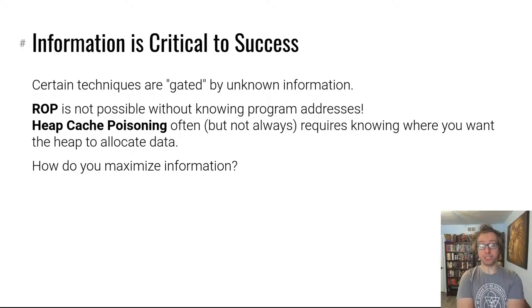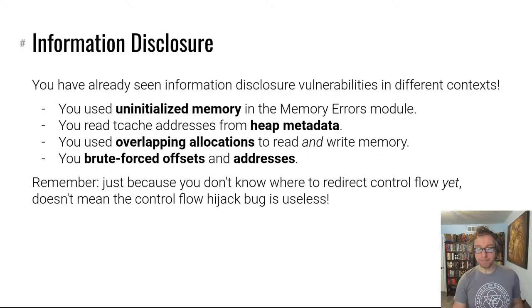Oftentimes, except for in certain situations, any sort of heap cache poisoning or heap allocation redirection techniques require knowing where you want the heap to allocate data or require knowing where the heap structures are in memory in the first place. How do you maximize this information that you know? Of course we have talked about a number of mitigations that are explicitly aimed at keeping this information away from you. Stack canaries put an unknown value at the end of every stack frame. Address space randomization puts memory in random places in the memory space.